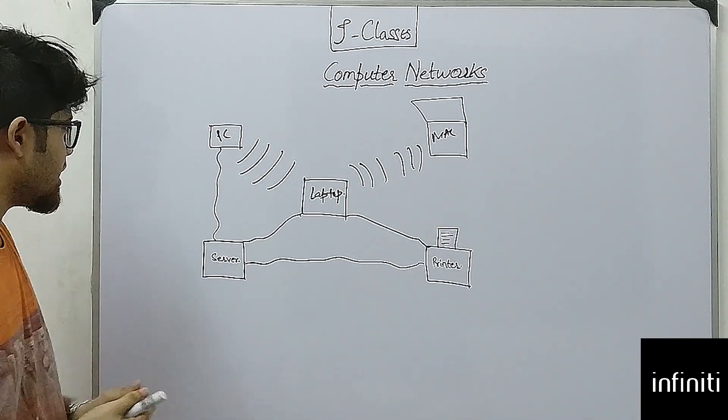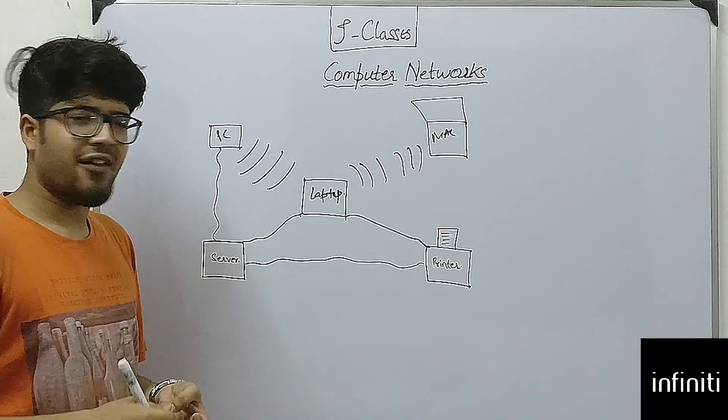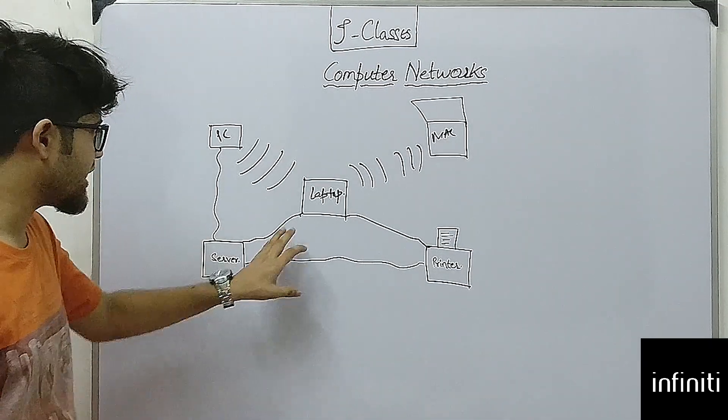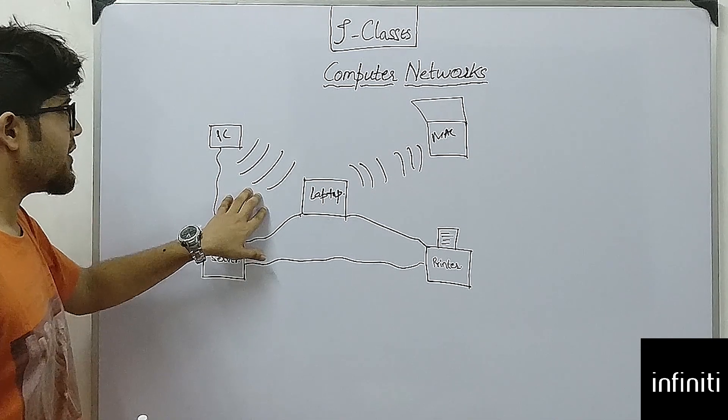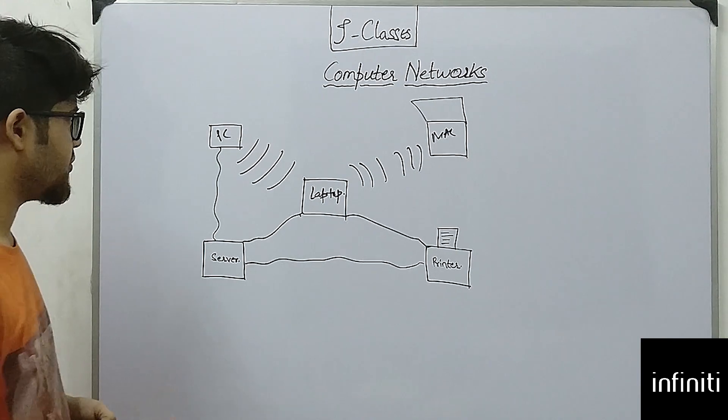There can be different physical medias. Like wired media, we have coaxial cables, we have optical fibers and different cables like that. And in wireless devices, we have Wi-Fi—that kind of thing which involves radio waves, microwaves, infrared waves, all those kinds of things.